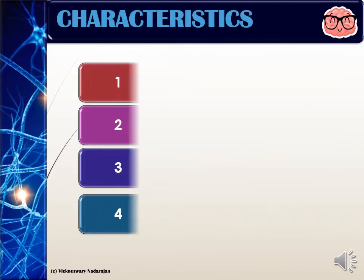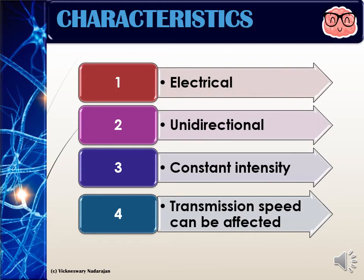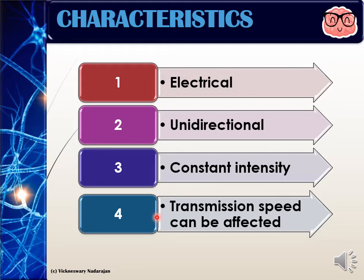There are only four characteristics for you to remember, so that's quite simple. The first characteristic is that impulse is electrical. The second characteristic is that impulse is unidirectional, meaning that it moves in only one direction. Thirdly, the potential of an impulse is constant. And the fourth characteristic is that the transmission speed of an impulse can be affected by external factors. So let's start off with characteristic one.